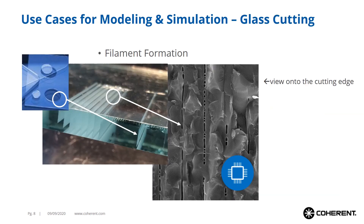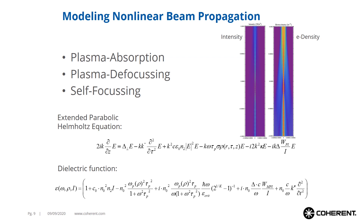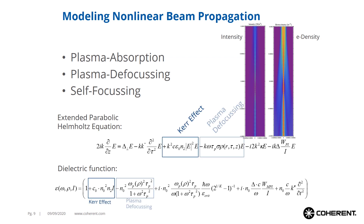The first use case is our Smart Cleave glass cutting process, which is based on the formation of filaments inside the glass volume. The cut contour is achieved with a curtain of single filaments placed at equal distances. After processing, you can break the glass along the contour very easily, in some cases with the help of an additional heat source. Modeling this process requires a mathematical model of nonlinear beam propagation, including effects like plasma absorption, plasma defocusing, and self-focusing, each represented by corresponding terms in the governing equation.